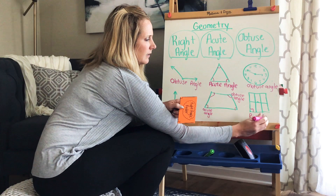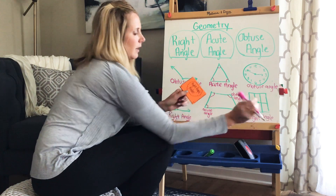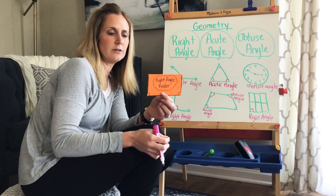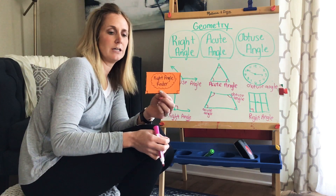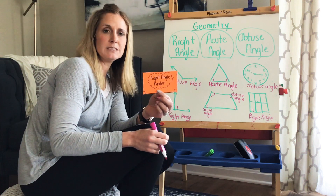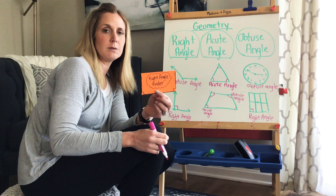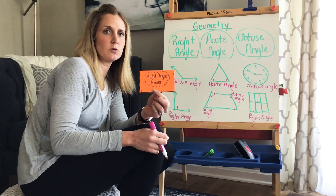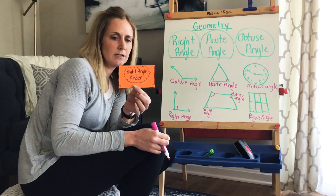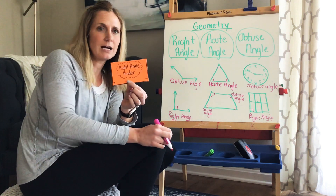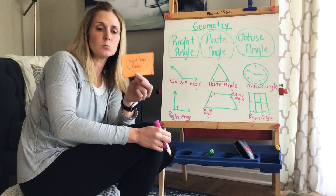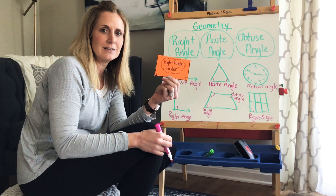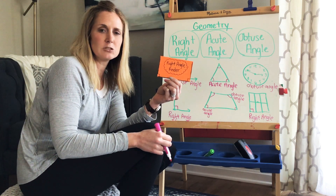If you haven't done it already, go make yourself a right angle finder. If you don't have an index card, use a piece of paper and cut it to the size of an index card to make it more manageable. Then use your right angle finder and go all around your house to see if you can find some right angles. Good luck, guys — take some pictures of your right angles!